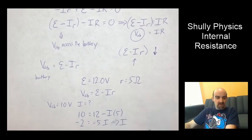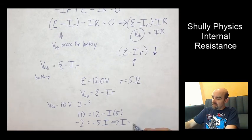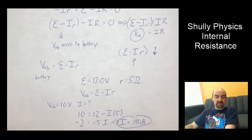So we can find that 10 minus 12 is negative 2 equals negative 5I. So there would be a current equal to 2 divided by 5, or 0.4 amperes.